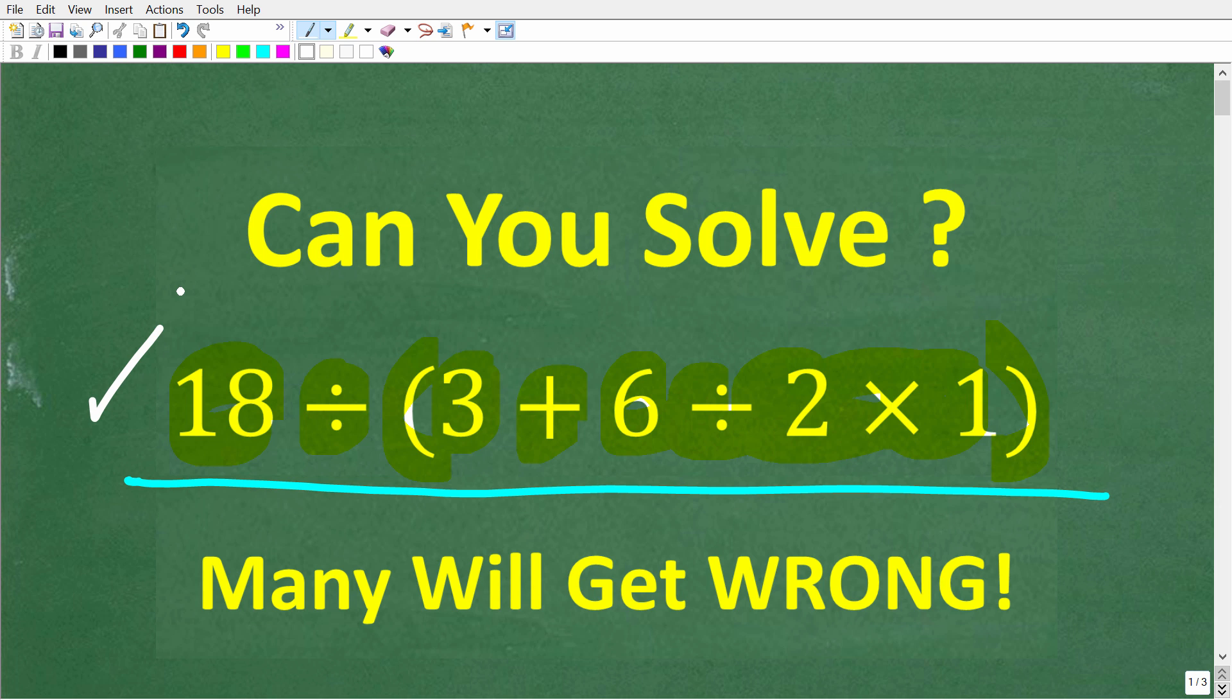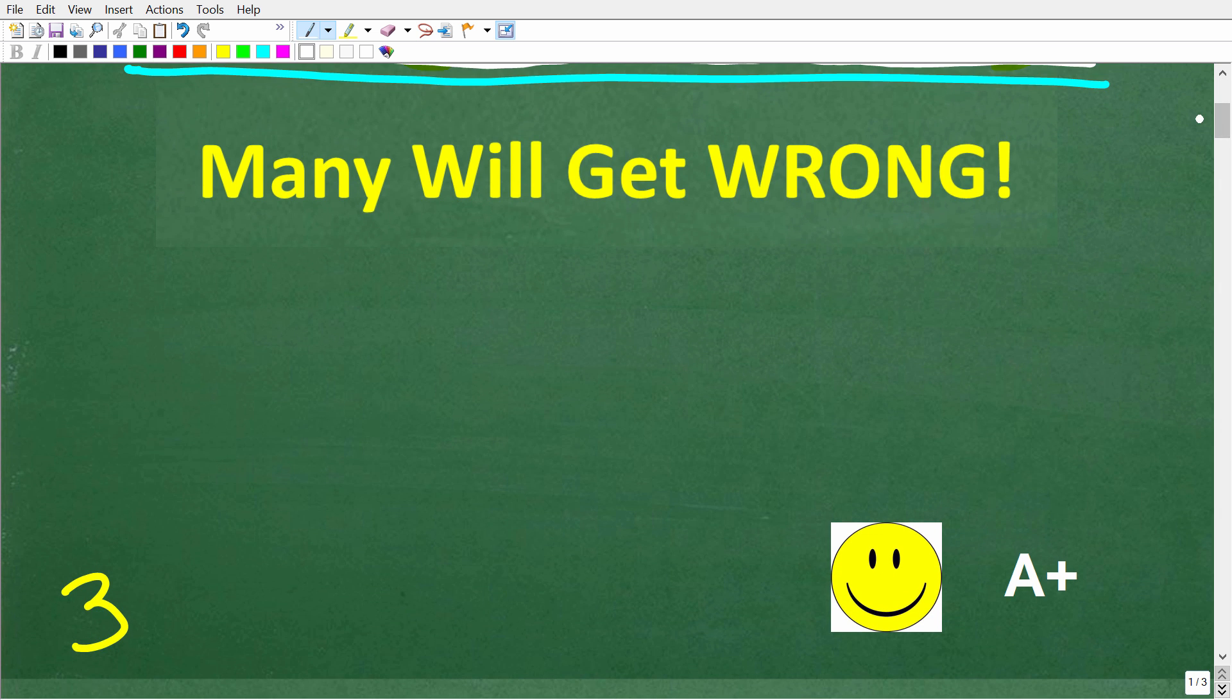Of course, I'm going to solve this problem step by step. One more time, we have 18 divided by parentheses, 3 plus 6 divided by 2 times 1 in parentheses. Let's take a look at the solution. The correct answer here is 3.